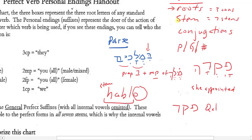Okay? So, the roots are the consonants that make up the semantics of the verb. What the nature of the action is.